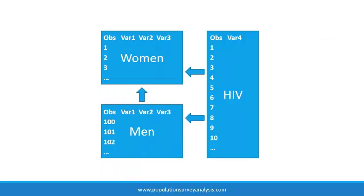Here is one situation with DHS data that requires both merge and append. We will analyze HIV infection status and several demographic and social covariates in both men and women. In the DHS data, women covariates, men covariates, and HIV test results for men and women are stored in three separate files. So we have to first append men and women demographic and social data, then merge HIV status.